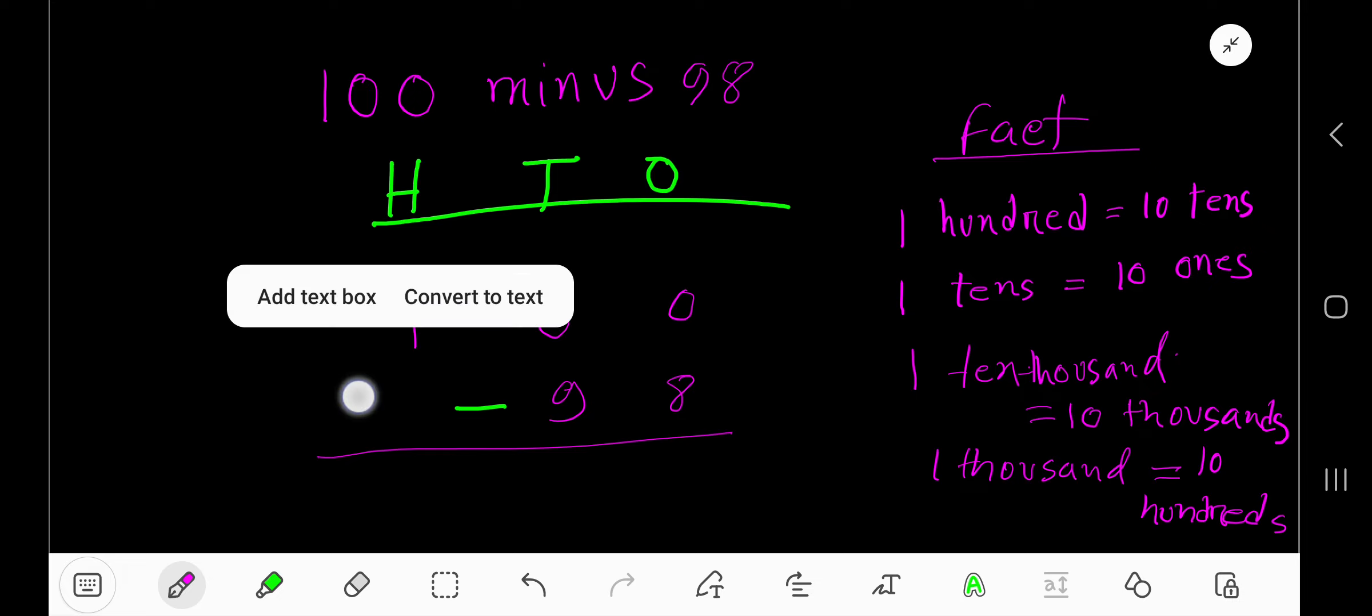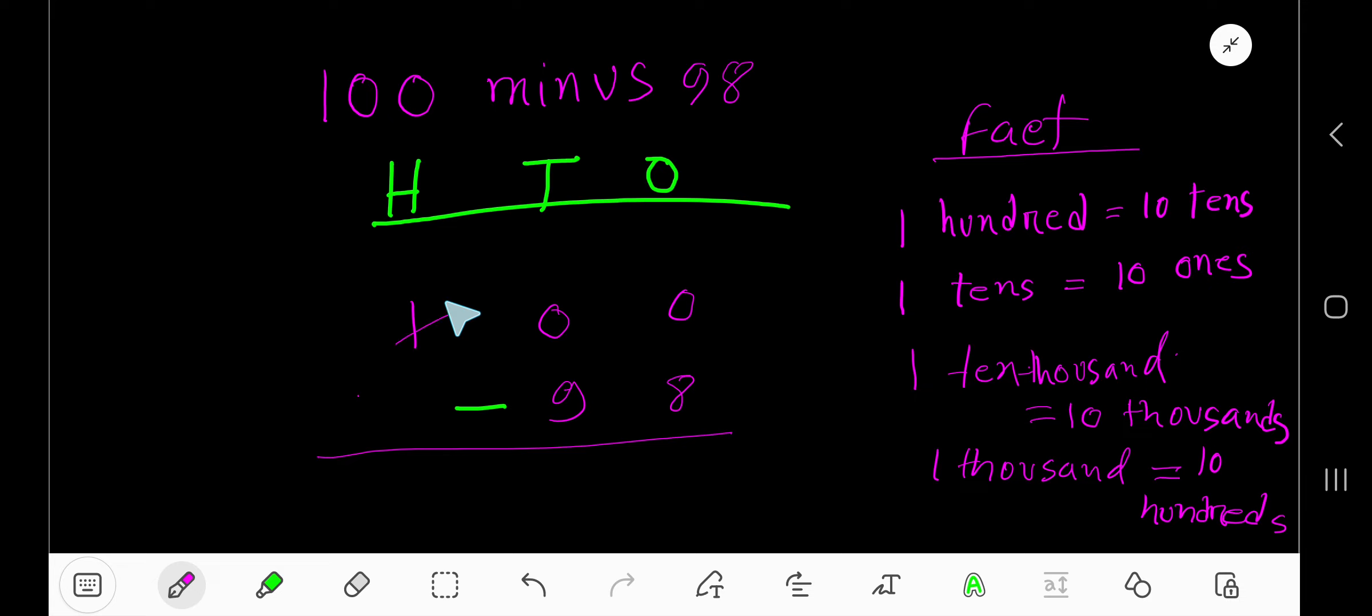If you borrow from 100, then you will have 0. 100 equals 10 tens, so 100 becomes 10 tens in the tens column. If you borrow 1 ten, then you will have 9 tens. 1 ten equals 10 ones.